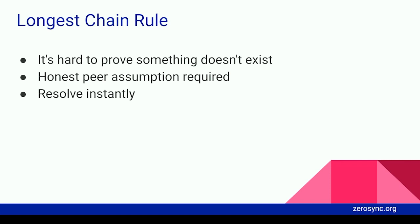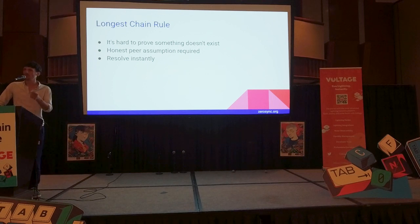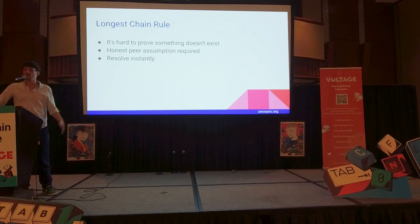That's quite cool because in Bitcoin itself, you cannot do that. In Bitcoin, you have to download every claimed chain. But if somebody tells you they have a chain that is a billion blocks long, with our system you only have to download one megabyte of proof. And if it's true, then it's true. And if it's not true, then you know it immediately.